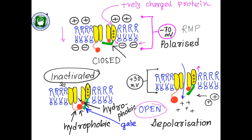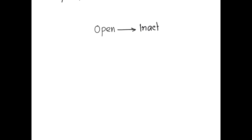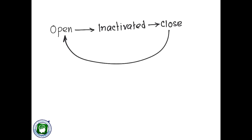Now we know why this channel is sensitive to voltage change across the cell membrane. A sodium channel always inactivates after opening — it follows a certain direction. After opening it is inactivated, and after inactivation it cannot reopen; it has to return to the closed state before opening again. When the neuron is at rest at minus 70 millivolt, the voltage-gated sodium channels are closed.